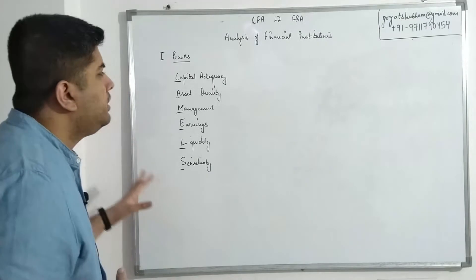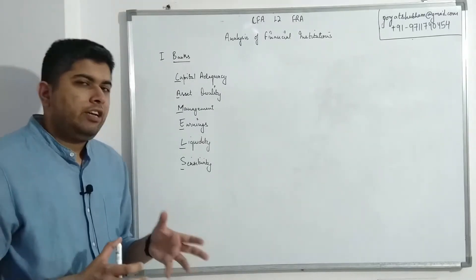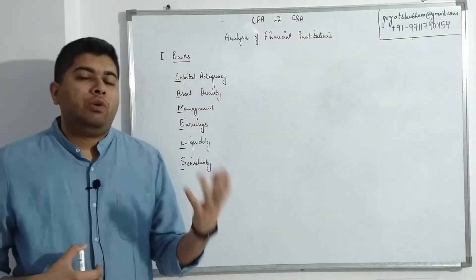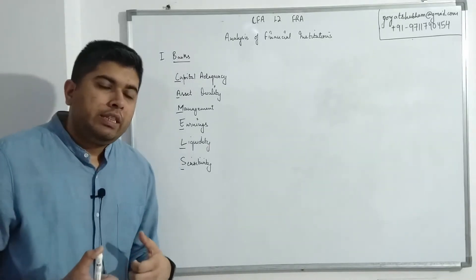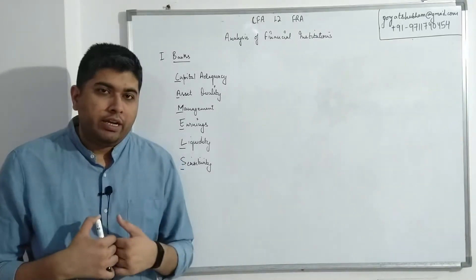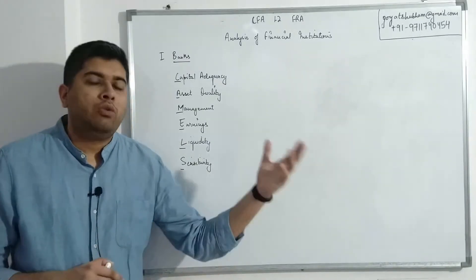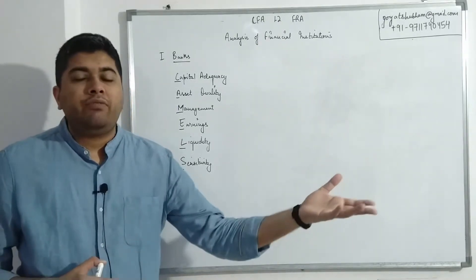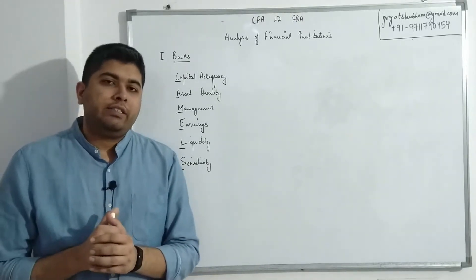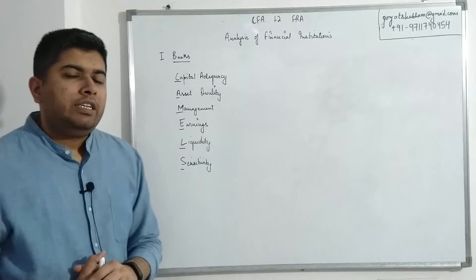Let's look at each of these components individually one by one, starting with capital adequacy. Capital adequacy is basically trying to tell us: does the bank have enough capital with them or not? Because normally banks give out a lot of loans. If those loans have some sort of default, then banks still owe money to the people who deposited money.